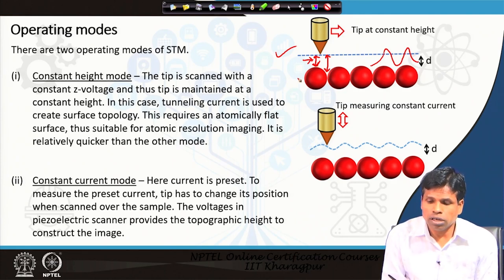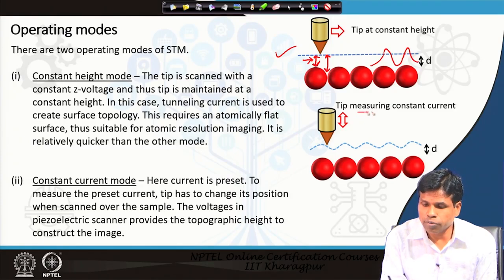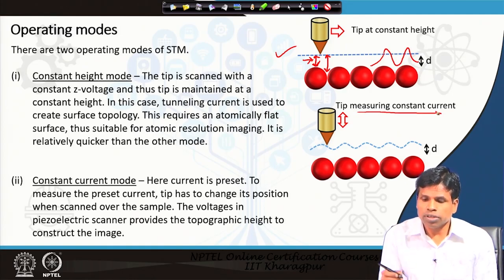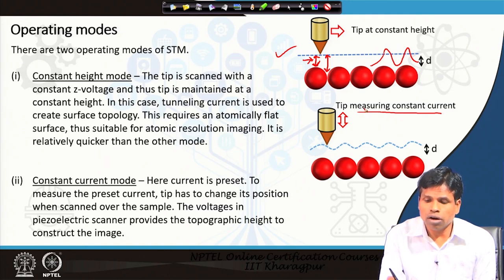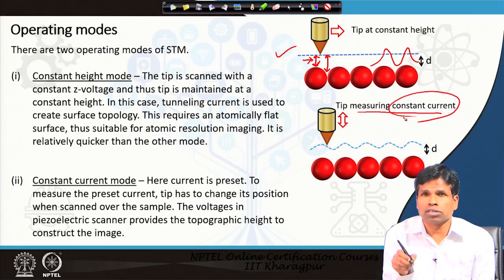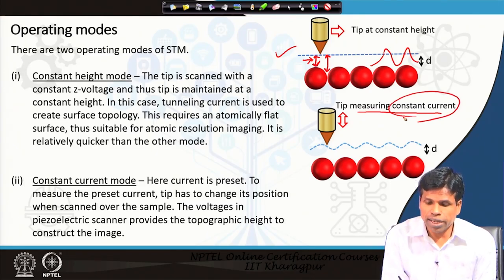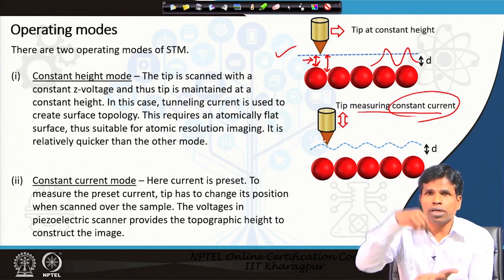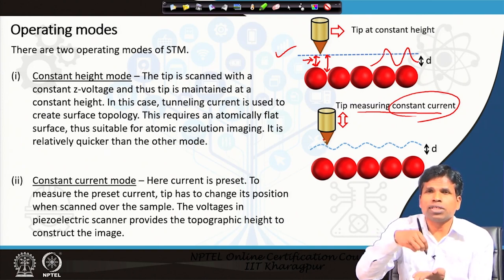Another mode is constant current mode. Constant current mode is used for unknown samples or rough samples. Here, our feedback control will set a preset current that it wants to measure. In order to maintain that constant current, as you see here, the tip has to go up and down to maintain that preset current.